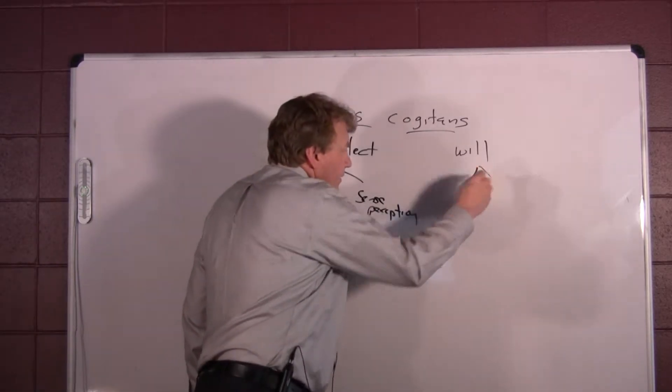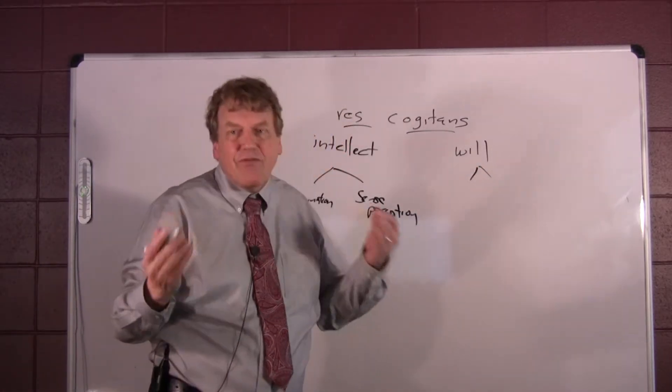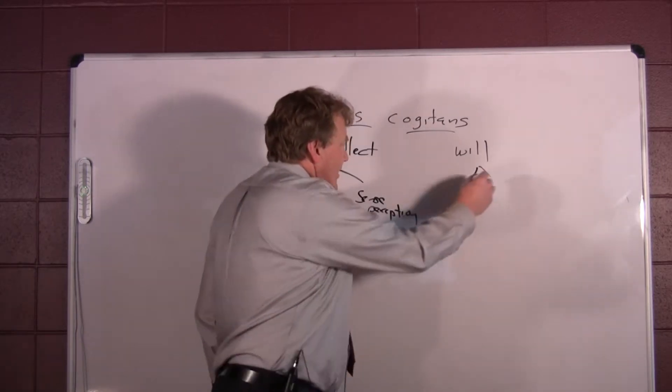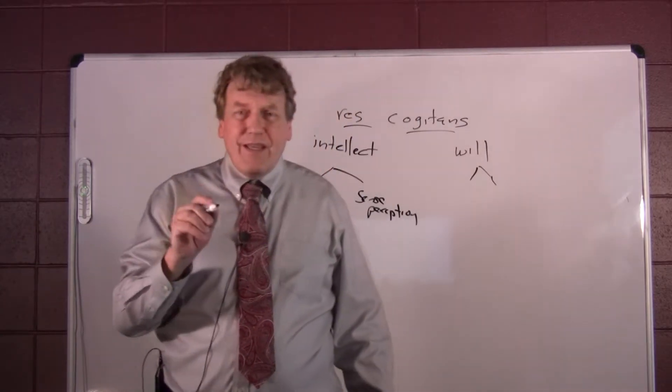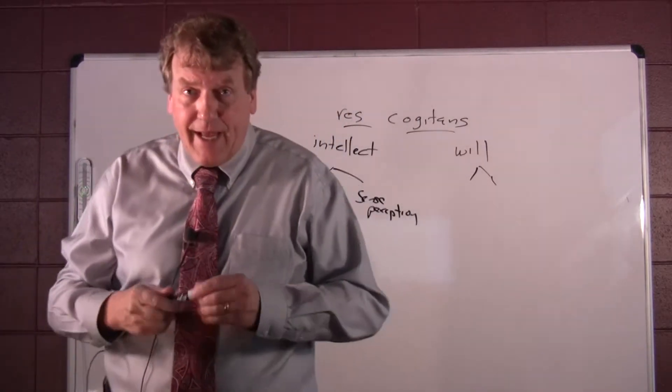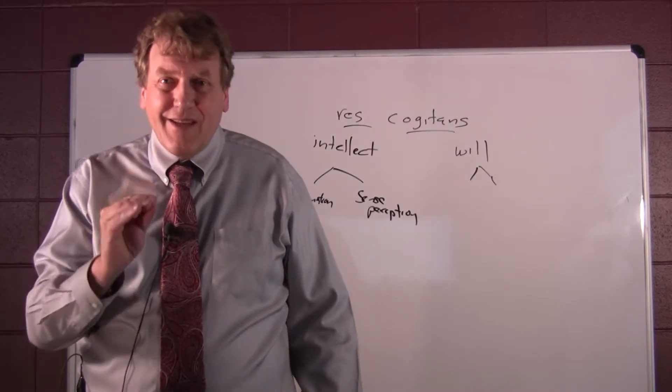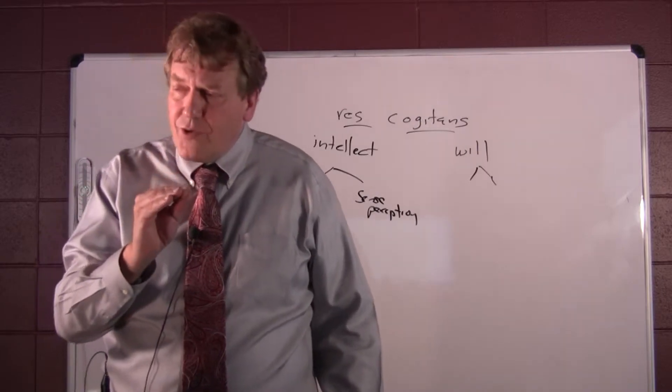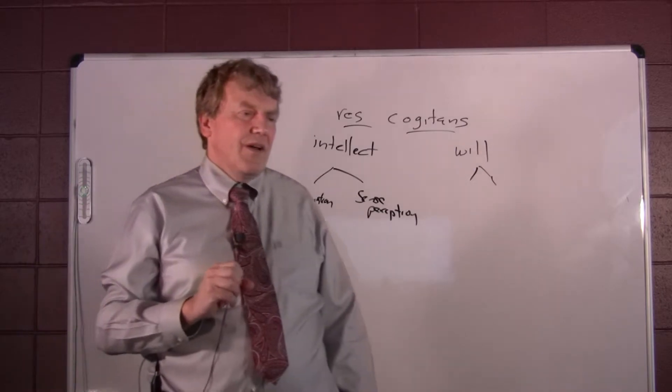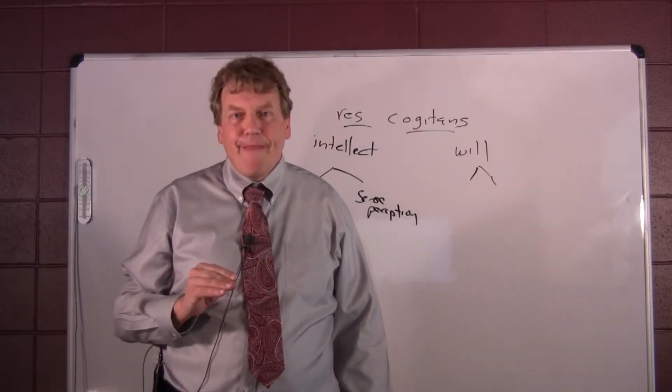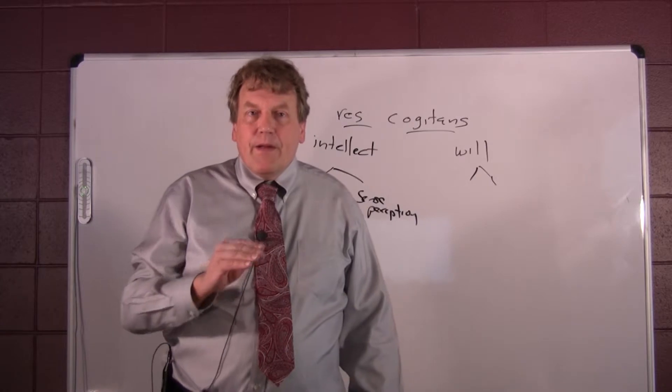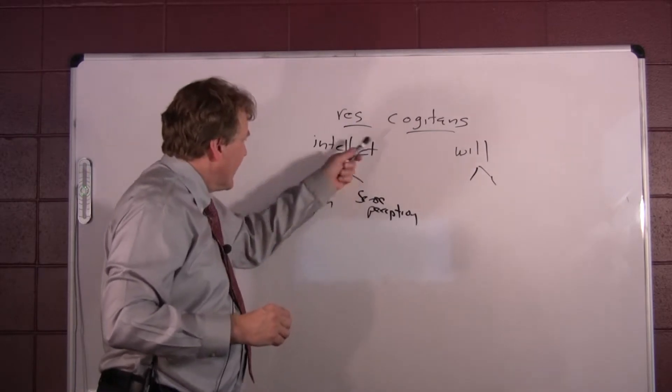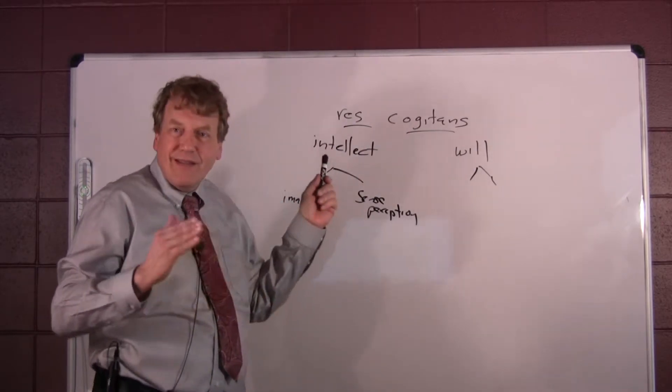And over here on the will, there are different kinds of willings. There's desire, aversion, assertion, denial, doubt. There are all kinds of different willings. And what he claims is that we have a purely intellectual apprehension of the substance of matter and mind.